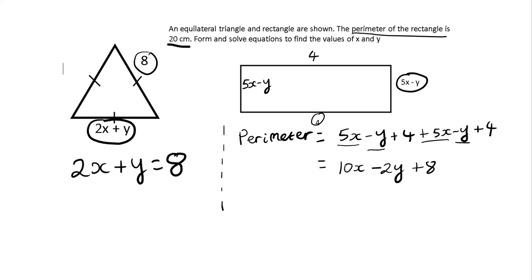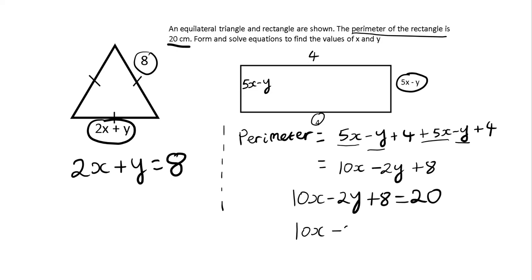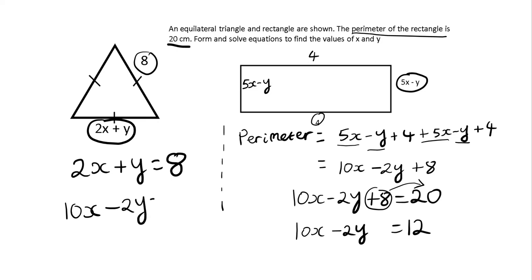I'm told in the question that the perimeter is 20. So I can say 10x minus 2y plus 8 equals 20. I can then rearrange this by subtracting the 8 from both sides. 20 take away 8 is 12. So I get 10x minus 2y equals 12.